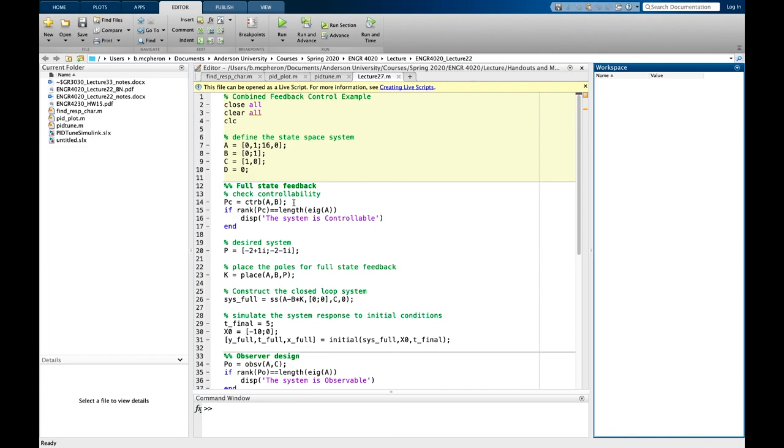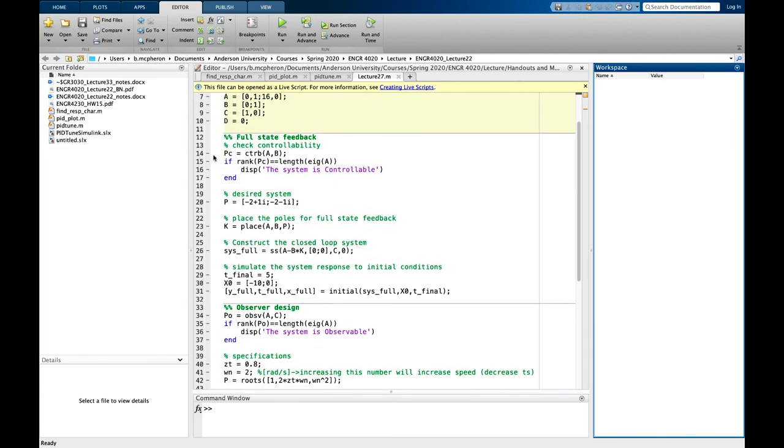The next thing I'm going to do is check the controllability matrix by using the command CTRB of A comma B. And then the next thing I'll do is I'll choose my desired polls. These are from the previous examples from some previous videos that, or lectures that I've done. And then I'll use the command place to find the gain matrix K that places the polls of that closed loop control system, which, the polls of SI minus A minus BK.